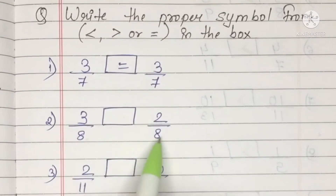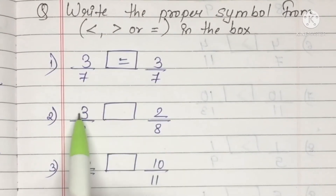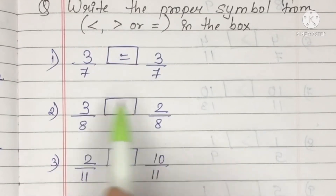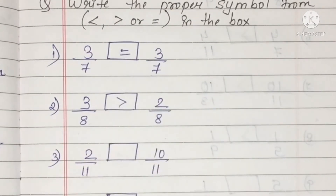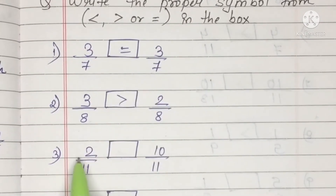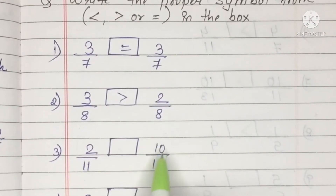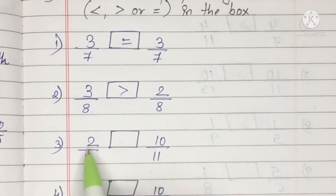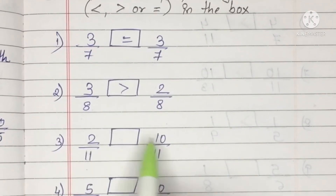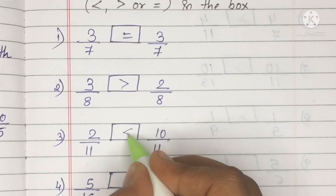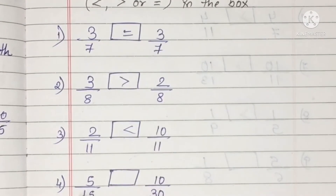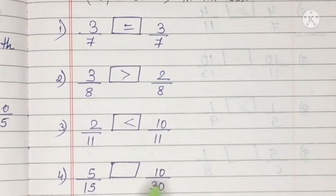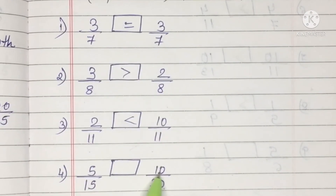Number 2 is 3 upon 8 and 2 upon 8. The denominator is common, so the numerator is the deciding factor — 3 is greater than 2. Number 3 is 2 upon 11 and 10 upon 11. Same denominator, so numerator is the deciding factor — 10 is greater than 2.